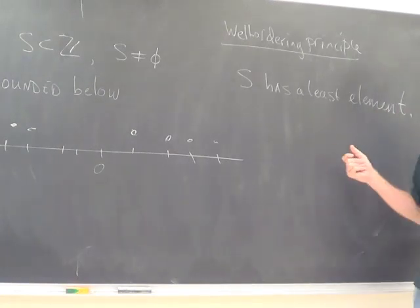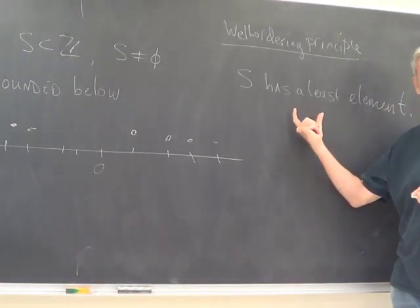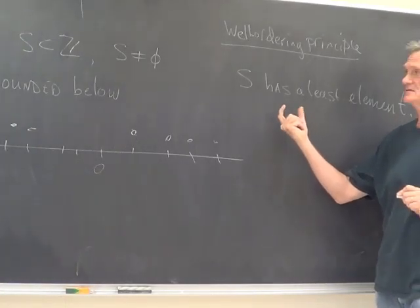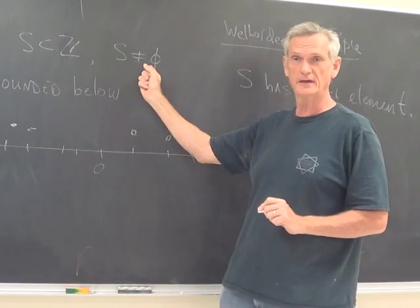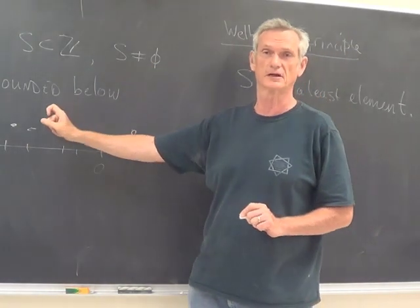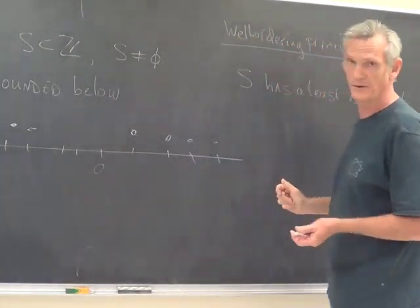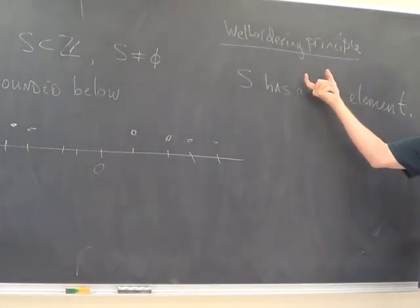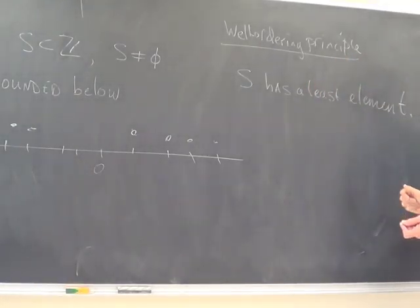This is a statement you're going to have a hard time disputing. You have a subset of this discrete set, it's not empty and it's bounded below, then there has to be a smallest element. That's the statement of the well-ordering principle. We take this as an axiom because it's entirely believable.